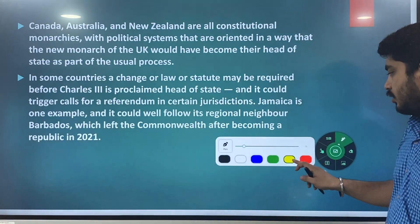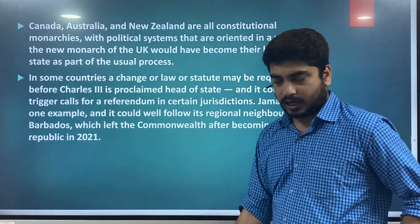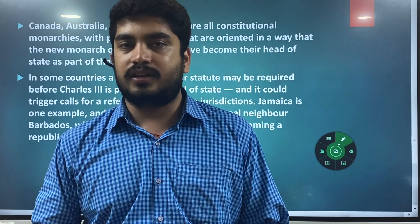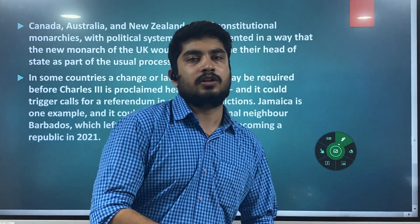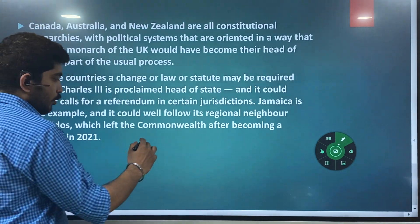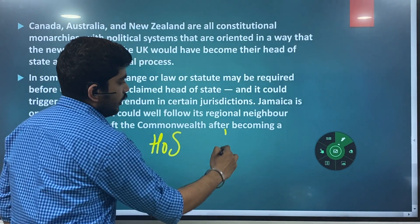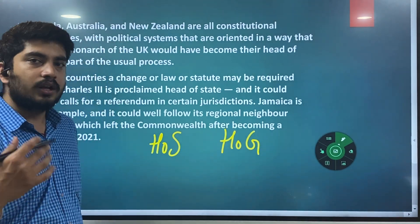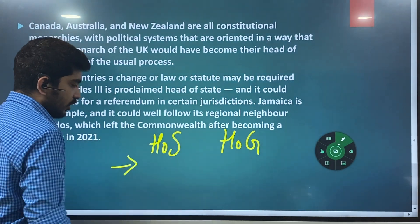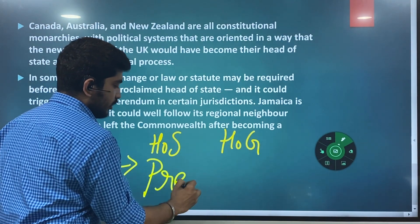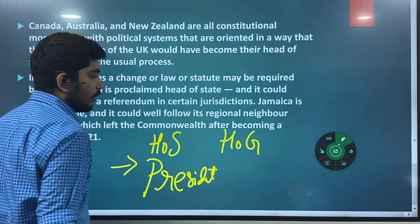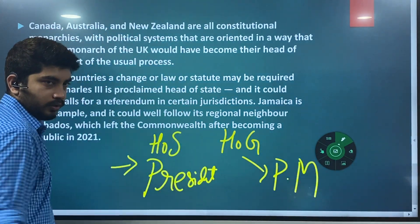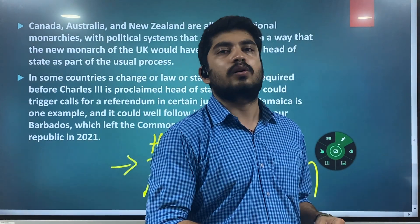As I mentioned earlier, countries such as Canada, Australia, and New Zealand are constitutional monarchies. Their political system is designed in such a way that the head of state will be the British monarch. You should know the difference between head of state and head of government. To understand this, I'll give you an example of India. Who is head of state in India? It is the President. The head of government will be the Prime Minister.